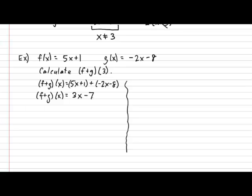And now we can plug in the 3 into that combined rule. So f plus g of 3 gives us 3 multiplied by 3 minus 7, giving us a final result of 2.